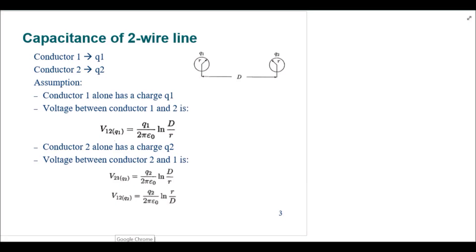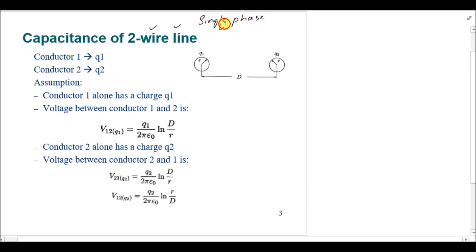Assalamu alaikum. In today's lecture we are going to find the capacitance of a two-wire line, which is a single-phase line. In the last two lectures we calculated the electric potential and the voltage between two points external to the conductor. Now these two values will be used to find the capacitance for a two-wire line.